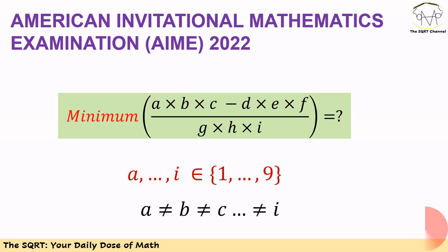We want to find the minimum value that we can possibly have for the fraction A times B times C minus D times E times F over G times H times I.